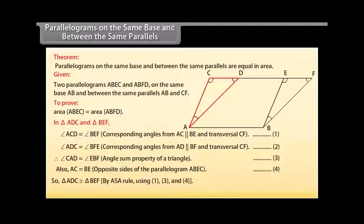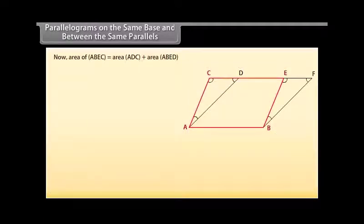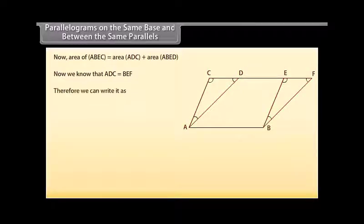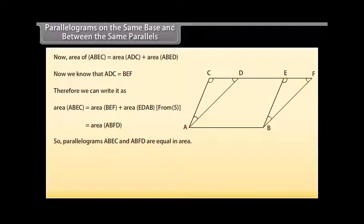So triangle ADC is congruent to triangle BEF by the ASA rule, using statements 1, 3, and 4. Therefore, area of triangle ADC is equal to area of triangle BEF, because congruent figures have equal areas. [Mark as 5.] Now, area of ABEC equals area of ADC plus area of ABED. Since area of ADC equals area of BEF, we can write: area of ABEC equals area of BEF plus area of EDAB, which equals area of ABFD. So parallelograms ABEC and ABFD are equal in area.